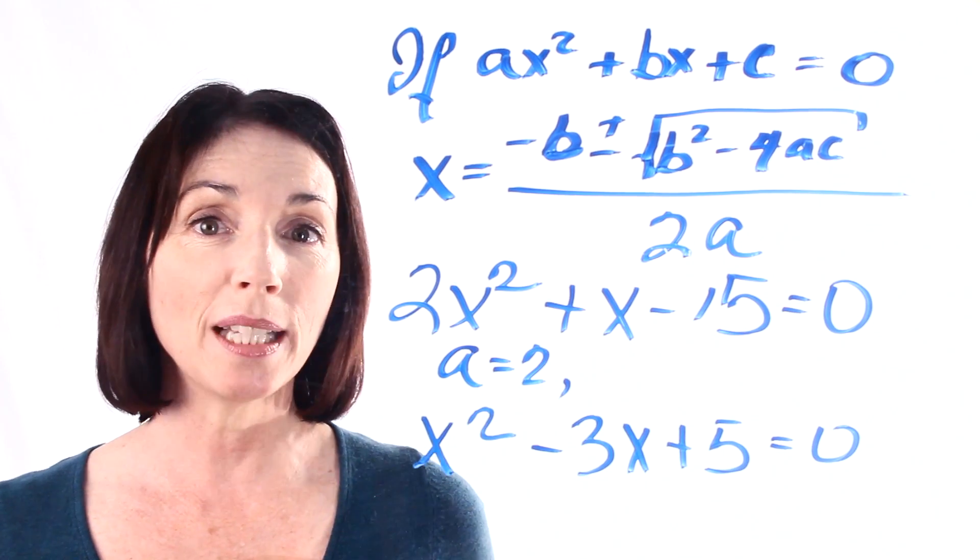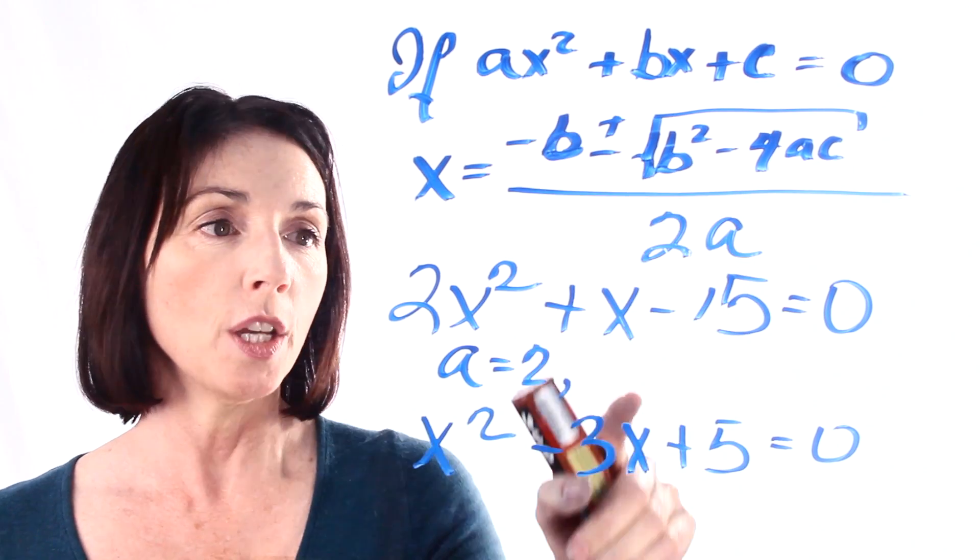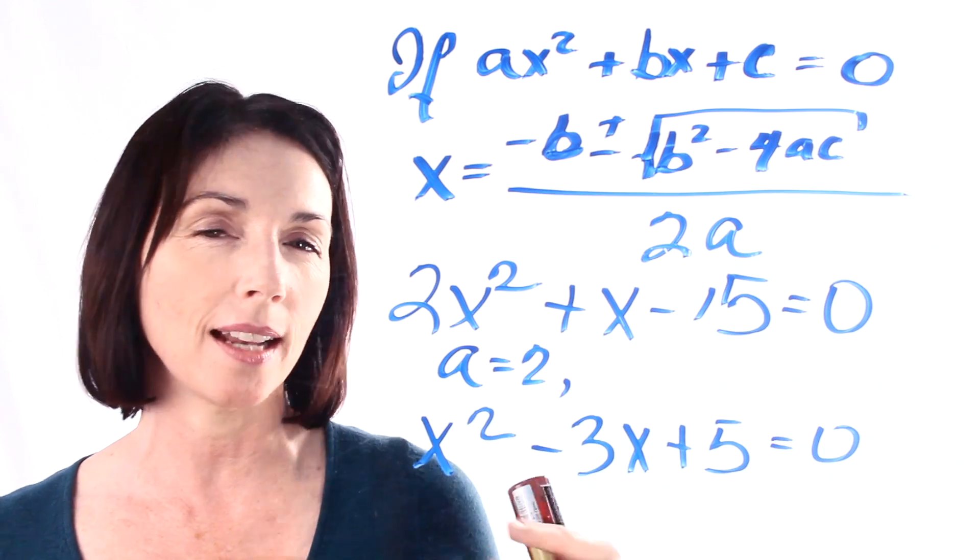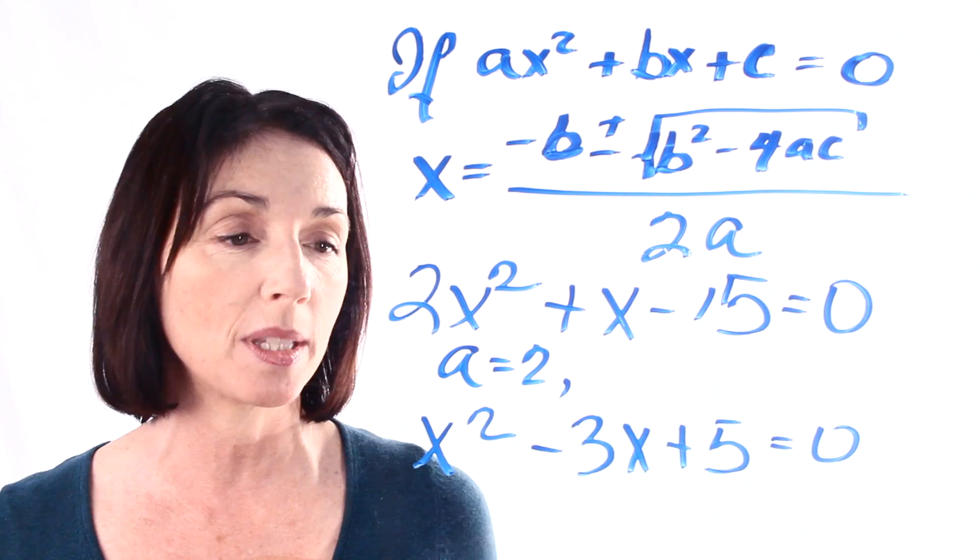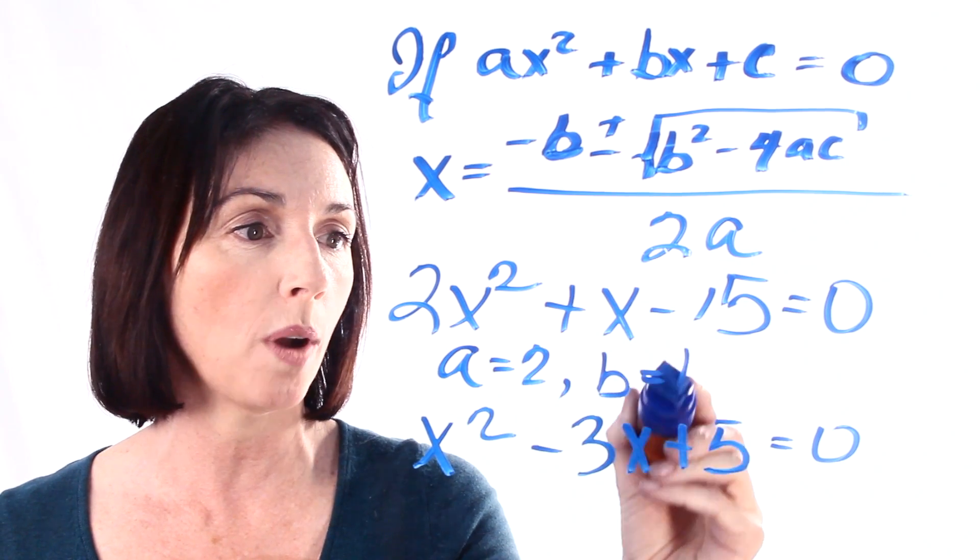Now, what about b? b is the coefficient of our x term. So, here we just have a single x. There's no number written in front of it, but x is the same as 1 times x. So, that means in this case, b is equal to 1.